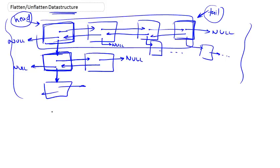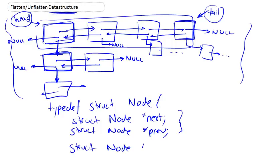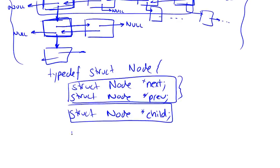This is the multi-level data structure that we defined. Here is the C code to define a node. It starts off just like a normal doubly linked list: you'd have a pointer to the next element and a pointer to the previous element. The addition we are creating is the pointer to the child, which may or may not be pointing at an actual child — it could be pointing to null. This child pointer comes from the tree part of this complex data structure, while next and previous are the doubly linked list part. And then we'd have the data itself stored in that node.